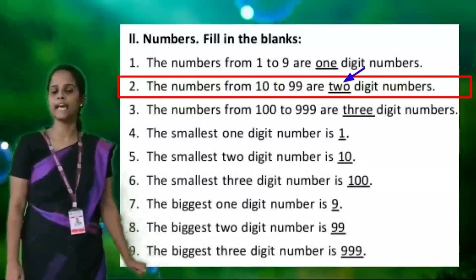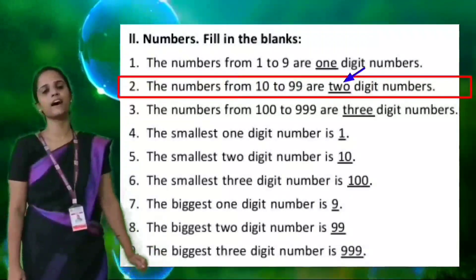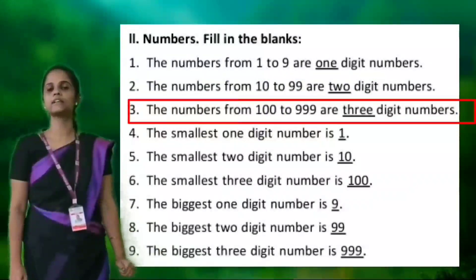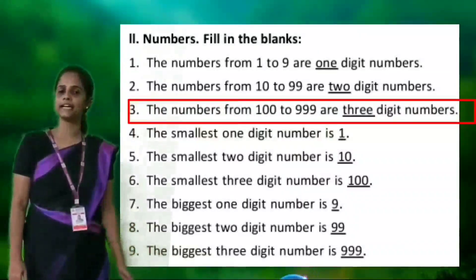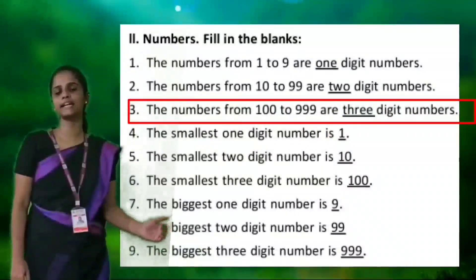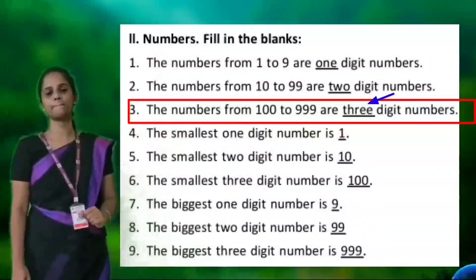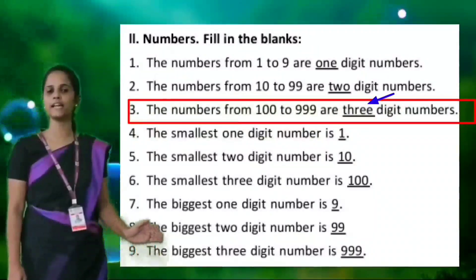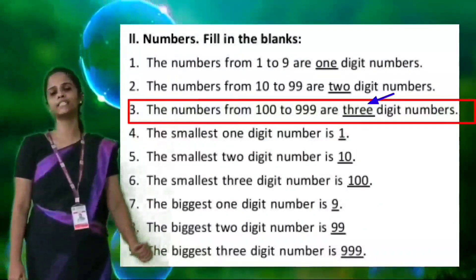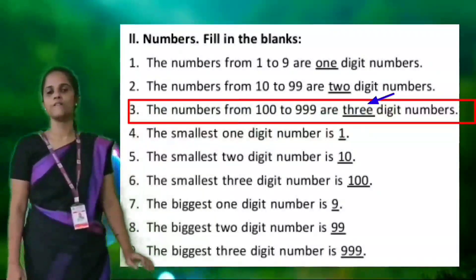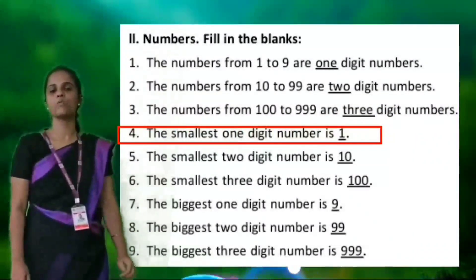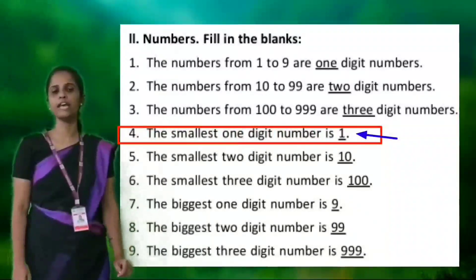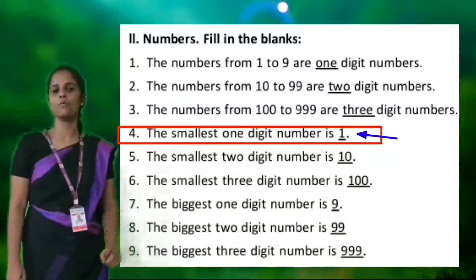The numbers from 10 to 99 are two digit numbers. Third: the numbers from 100 to 999 are three digit numbers. The smallest one digit number is 1.